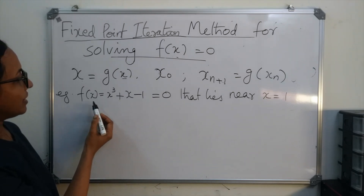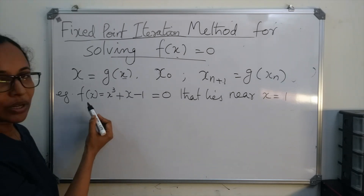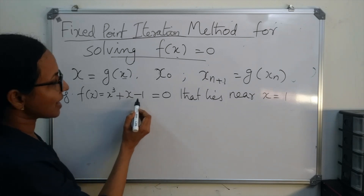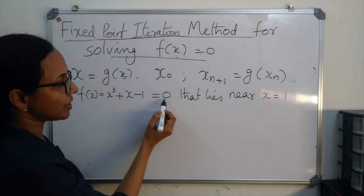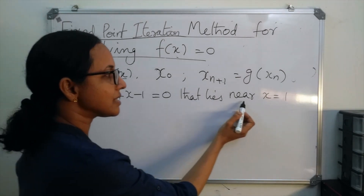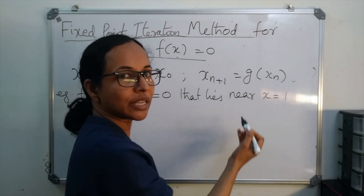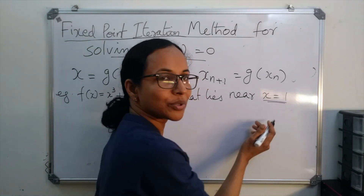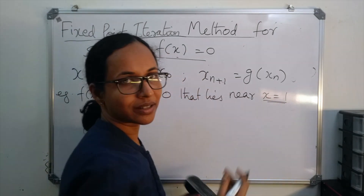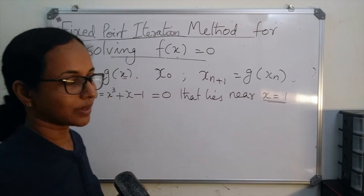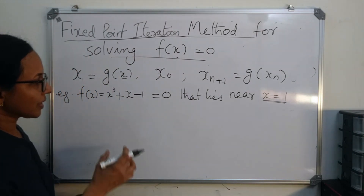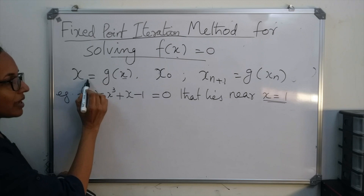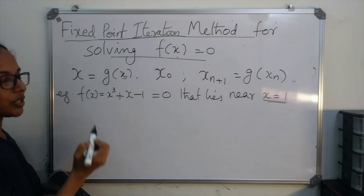Suppose we have to find the solution of f(x) = x³ + x − 1 = 0 that lies near x = 1. So our initial approximation is x₀ = 1. The first step is to rewrite this equation in the form x = g(x).